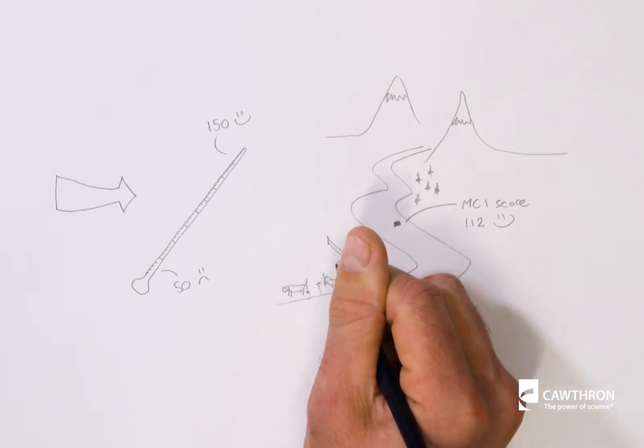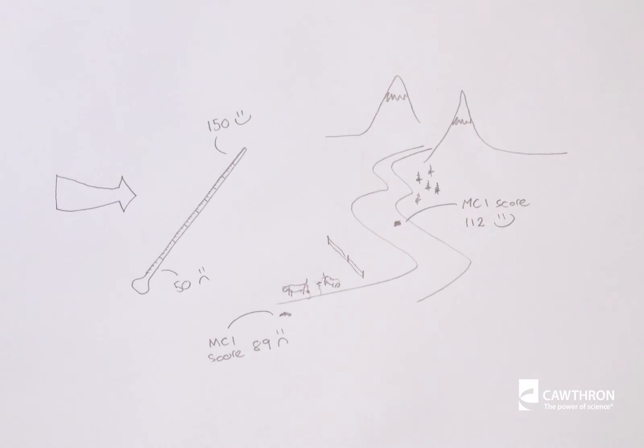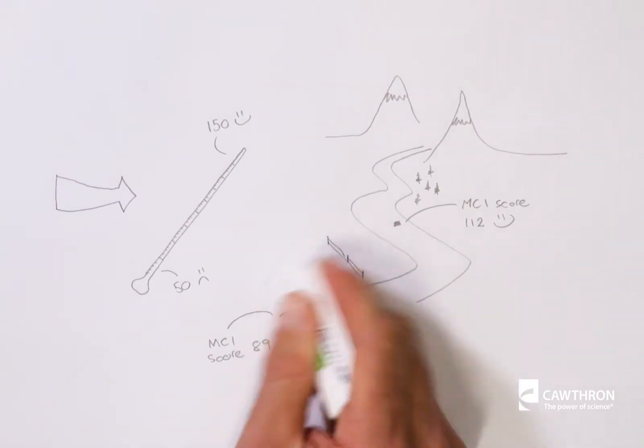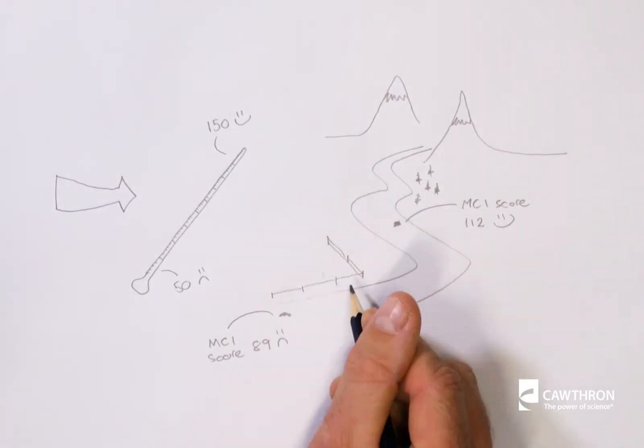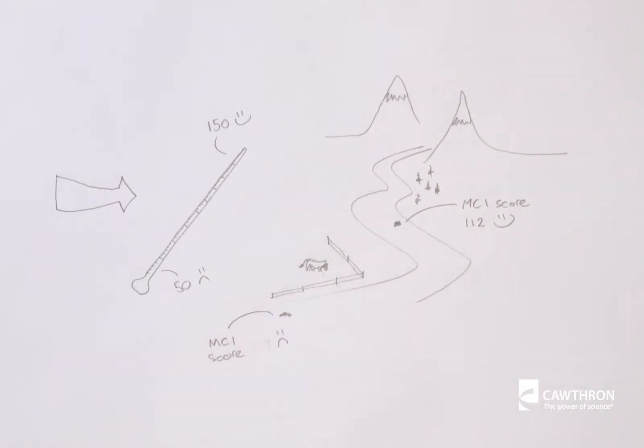In fact, the MCI has been so successful that every single regional council in the country uses it to assess the state of rivers and streams, and to see if farm management actions and good farming practices are making a difference. Turns out that some initiatives, like the wide-scale riparian fencing initiative undertaken by the nation's farmers, does help.